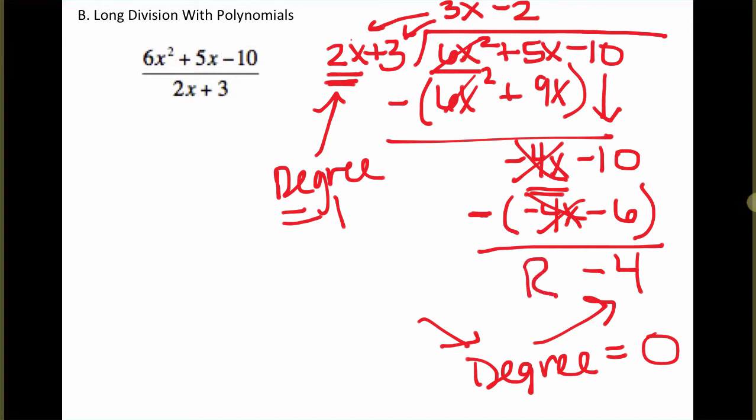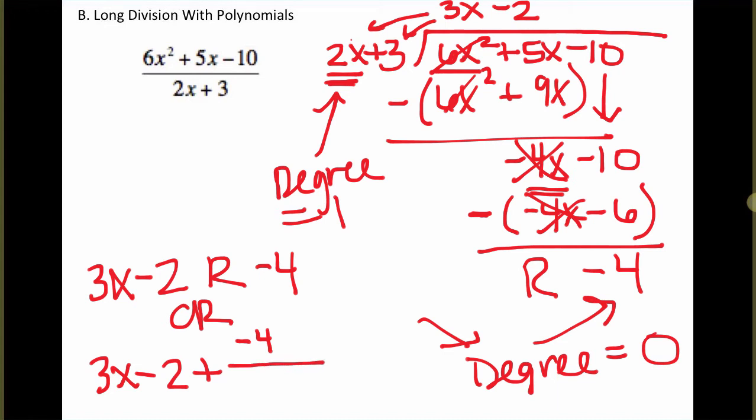So this negative 4 would be the remainder. So the answer that we can write, it's two ways. 3x minus 2 from the top, remainder negative 4. Or with that remainder, we also can make it a fraction. So make this a full expression. The remainder goes on the numerator of the fraction. And then the denominator is just what we were dividing by, the 2x plus 3.